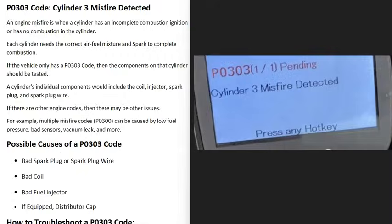Today I'm talking about a P0303 code, what it is and how you go about fixing it. A P0303 code is a Cylinder 3 misfire detected.